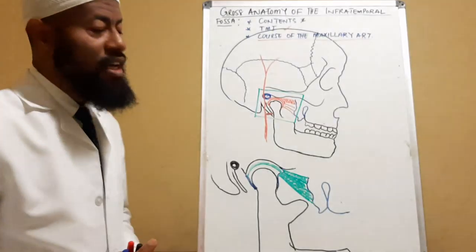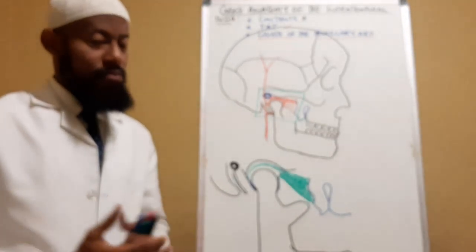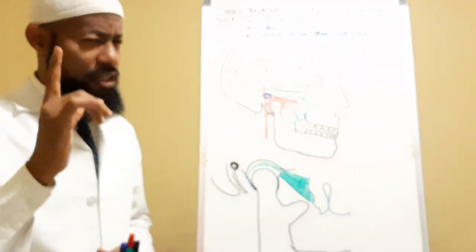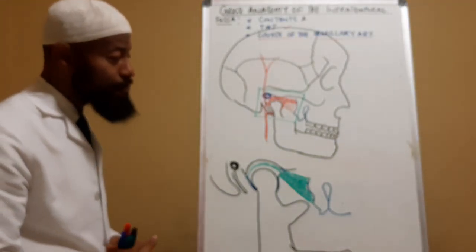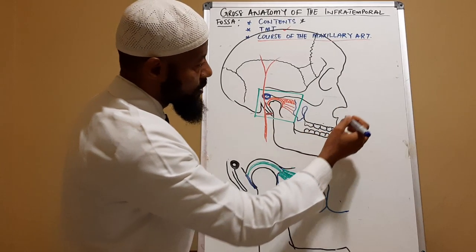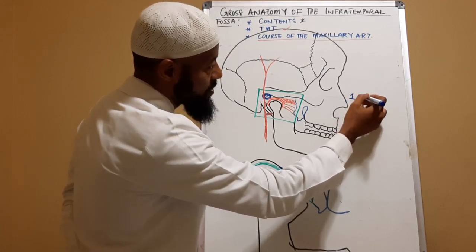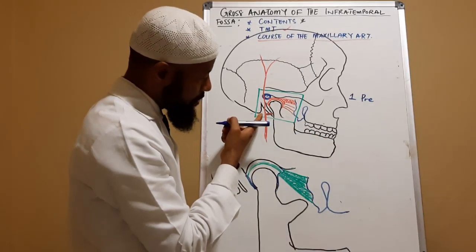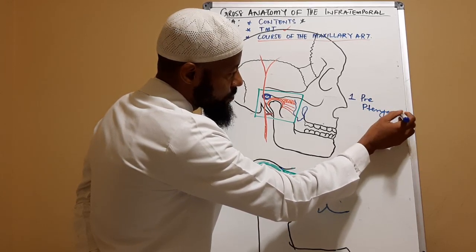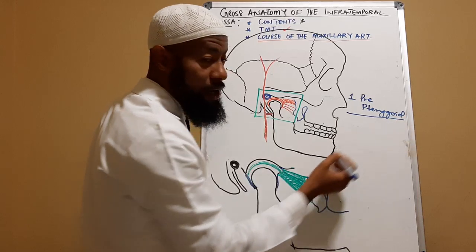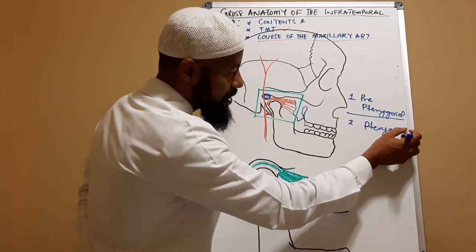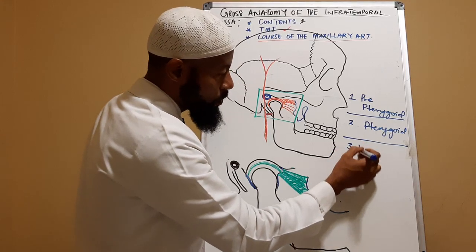Just like the pectoralis minor muscle divides the axillary artery into three parts, the lateral pterygoid muscle divides the maxillary artery into three parts. The first part is pre-pterygoid, because it is before the pterygoid. The second part is the pterygoid part, because it is just deep to the pterygoid muscle. And the third part is post-pterygoid.